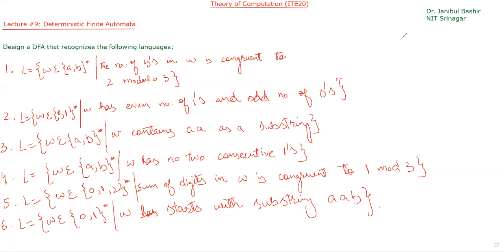Fifth: L = {w | w ∈ {0,1,2}* such that the sum of digits in w is divisible by some value}. Sixth: L = {w | w ∈ {0,1,2}* such that w starts with substring 'aa'}. You have to design DFAs for all six languages as homework.